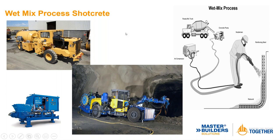For the wet mix process, you get a concrete pump fed to a spray concrete machine. You have a ready-mix truck, concrete pump, air compressor, and then accelerator added at the nozzle. All your quality control is in the ready-mix truck, so if you define the water-cement ratio correctly — we'll talk about that later — you maintain quality. This shows an example of a robotic sprayer in a mine, along with a concrete pump and a transmixer that can be used in mines or tunnels.